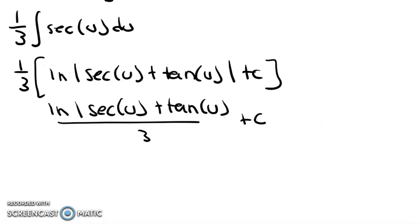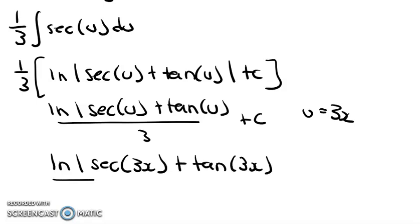Now we're going to substitute back in for u, and earlier we said that u equals 3x. So we get natural log of the absolute value of secant 3x plus tangent 3x all over 3 plus c.